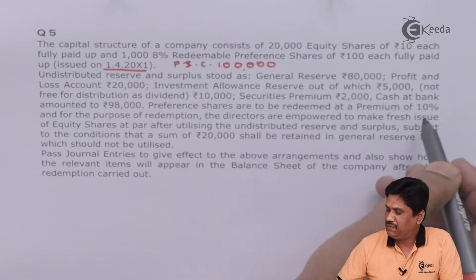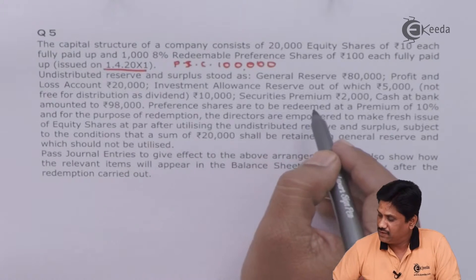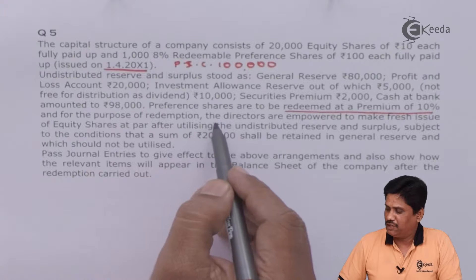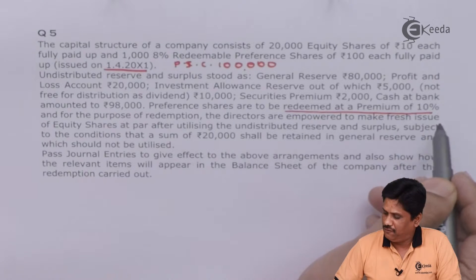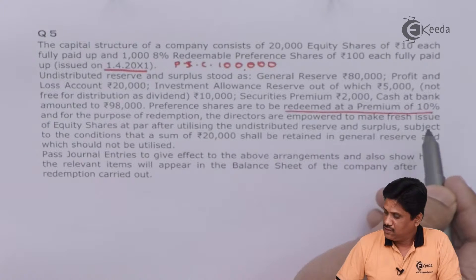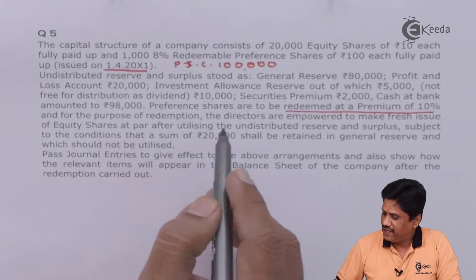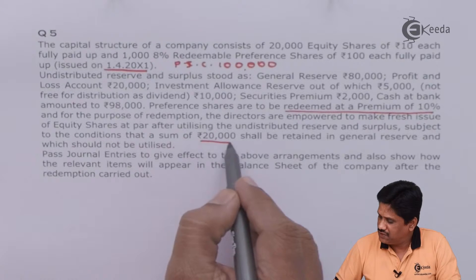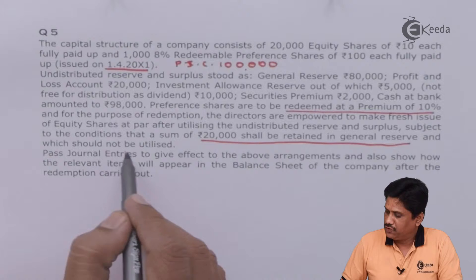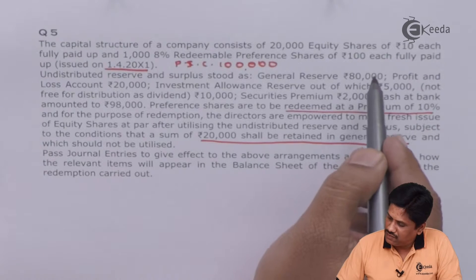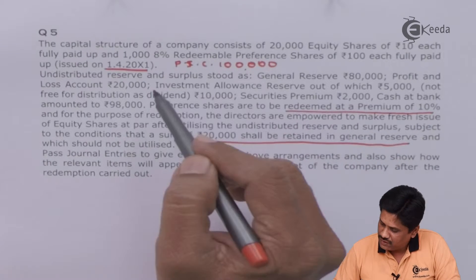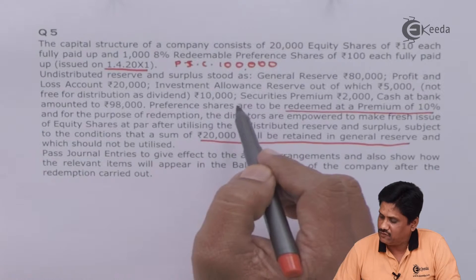Preferences are to be redeemed at a premium of 10%, and for that purpose directors are empowered to make a fresh issue of equities at par after utilizing undistributed reserves and surplus, subject to the condition that a sum of Rs.20,000 shall be retained in general reserve. So general reserve available is Rs.60,000, P&L account available Rs.20,000, and investment allowance reserve available Rs.5,000.